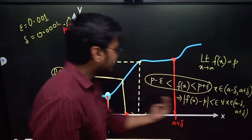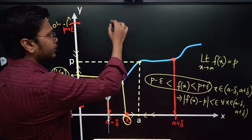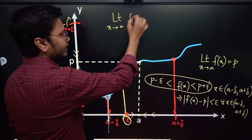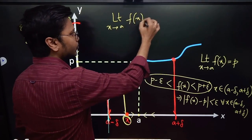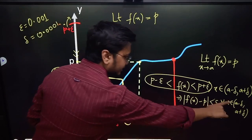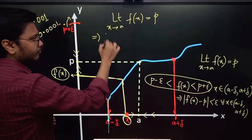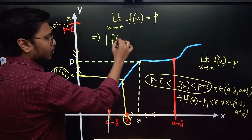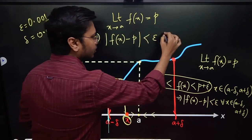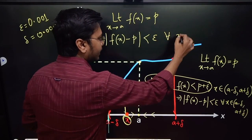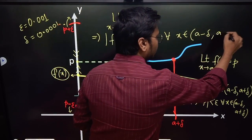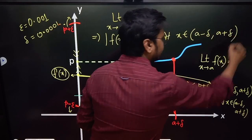So I'll write that freshly: limit x tending to a of f(x) equals p actually means the statement that mod of f(x) minus p is less than epsilon, for all x belonging to a minus delta to a plus delta. This becomes the proper definition of limit.